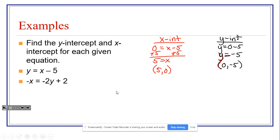Here's a second example for you to try. Pause the video at this point to give yourself a chance to try it on your own. So for the X-intercept, I'm going to plug in zero for Y. So we have negative X equals negative 2 times zero plus 2. That's negative X equals zero plus 2. So negative X equals 2. We'll divide that by negative 1. So X equals negative 2. That makes the X-intercept negative 2, zero.